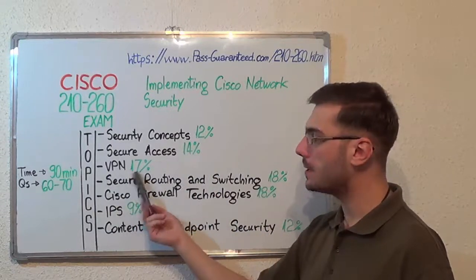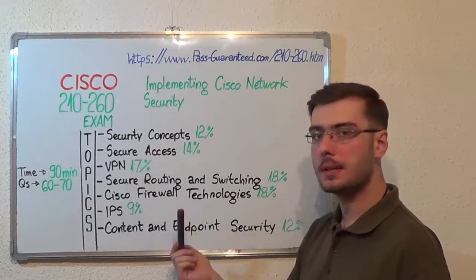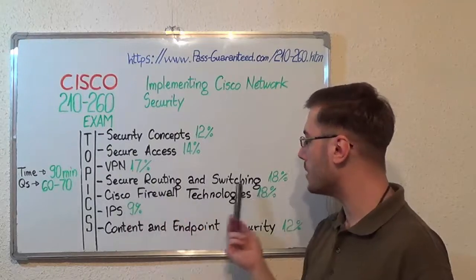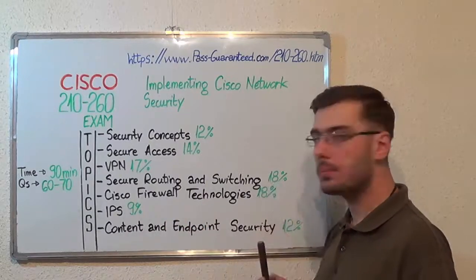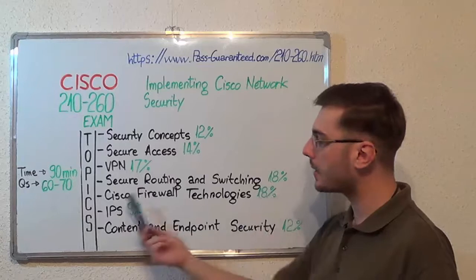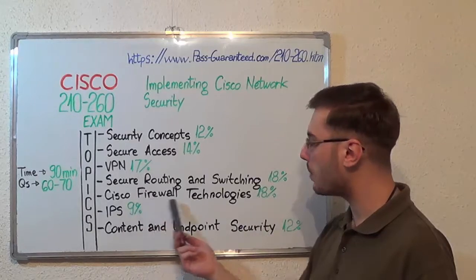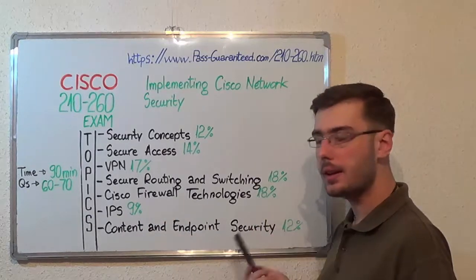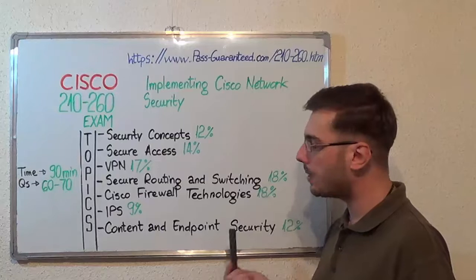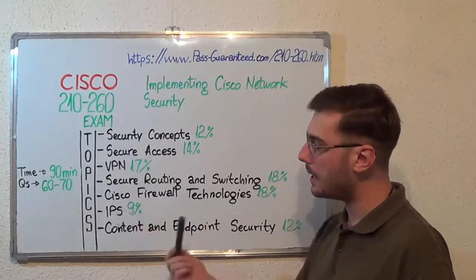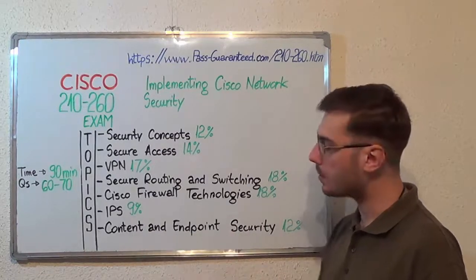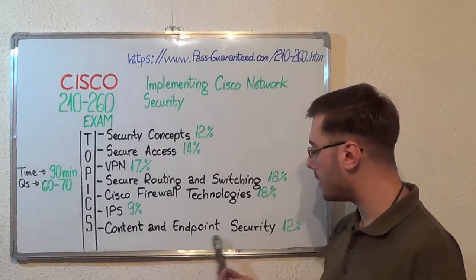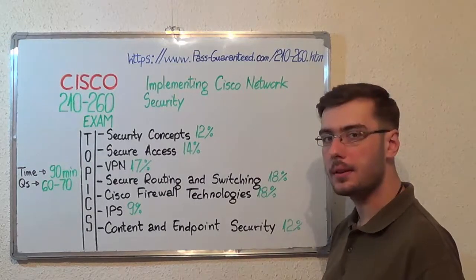VPN with 17%. Next, secure routing and switching with 18%. Next, Cisco Firewall Technologies also with 18%. After that we have IPS with 9%, and the last one, Content and Endpoint Security with 12%.